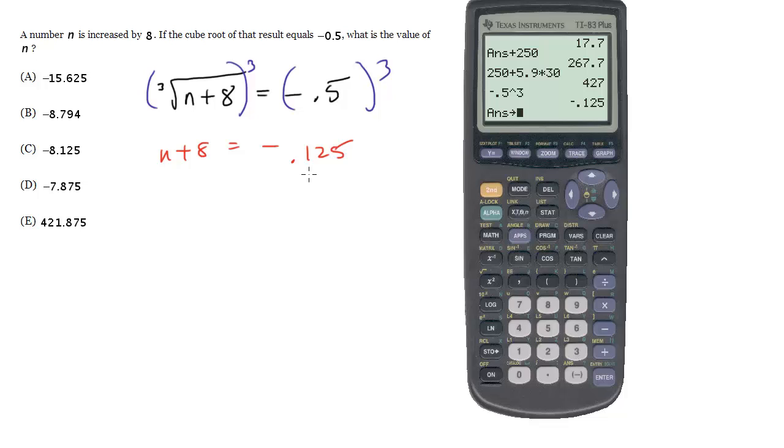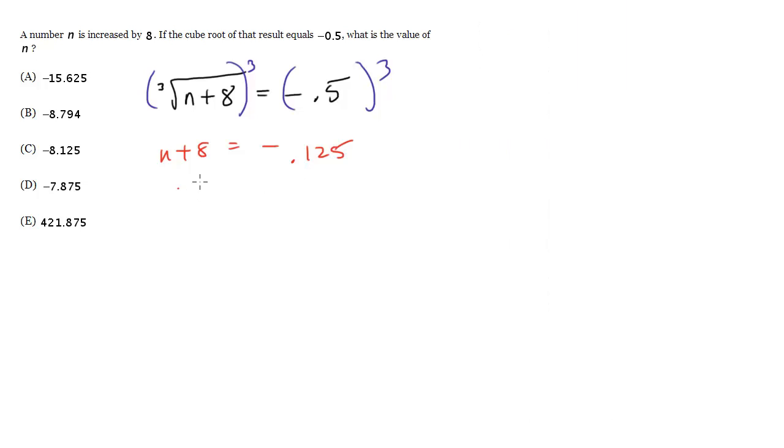And now we go ahead and subtract 8 from both sides. So we're going to get n equals, this combines into negative 8.125. And that is choice C.